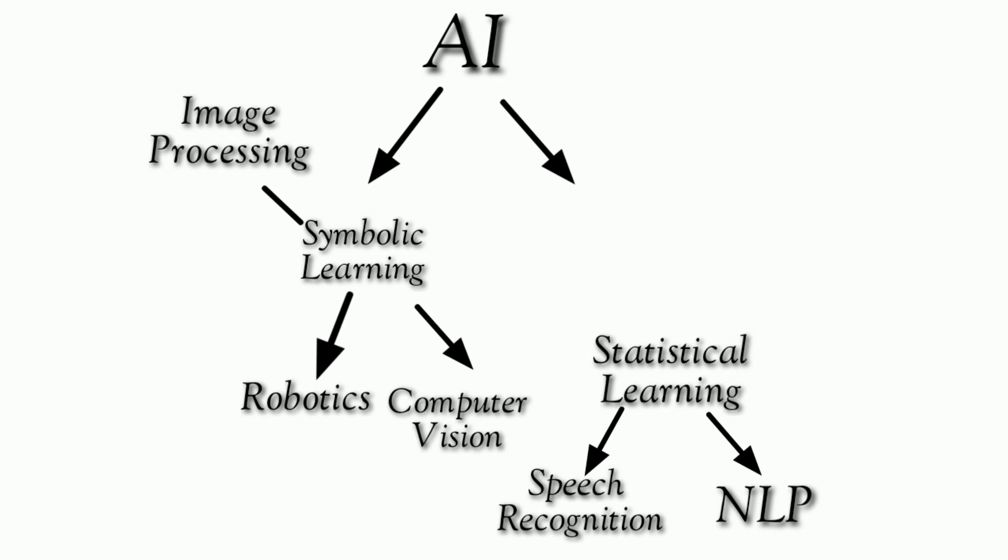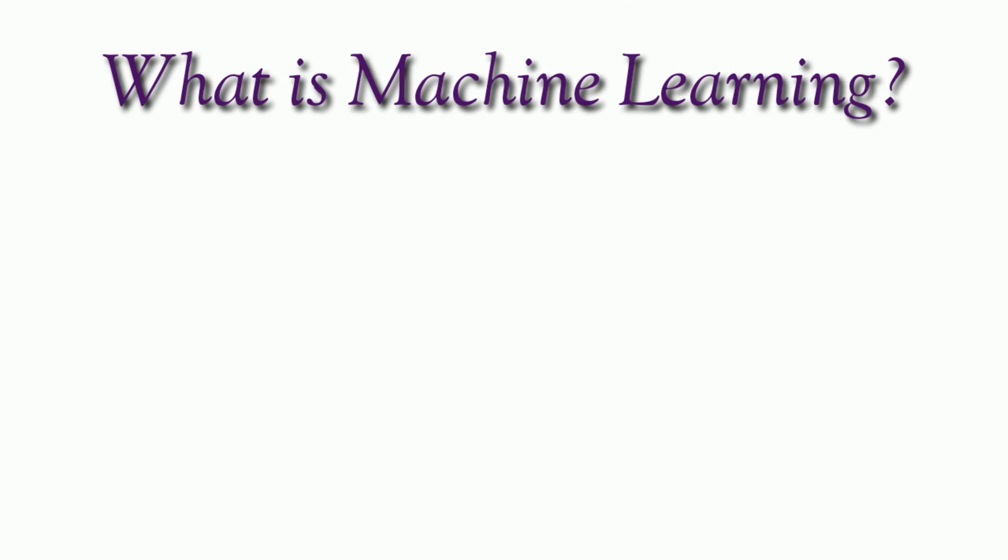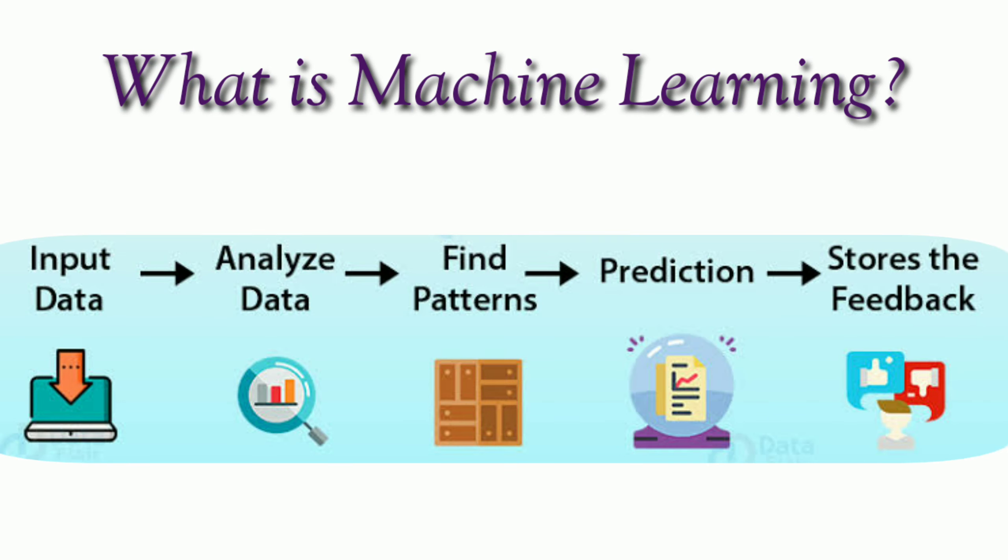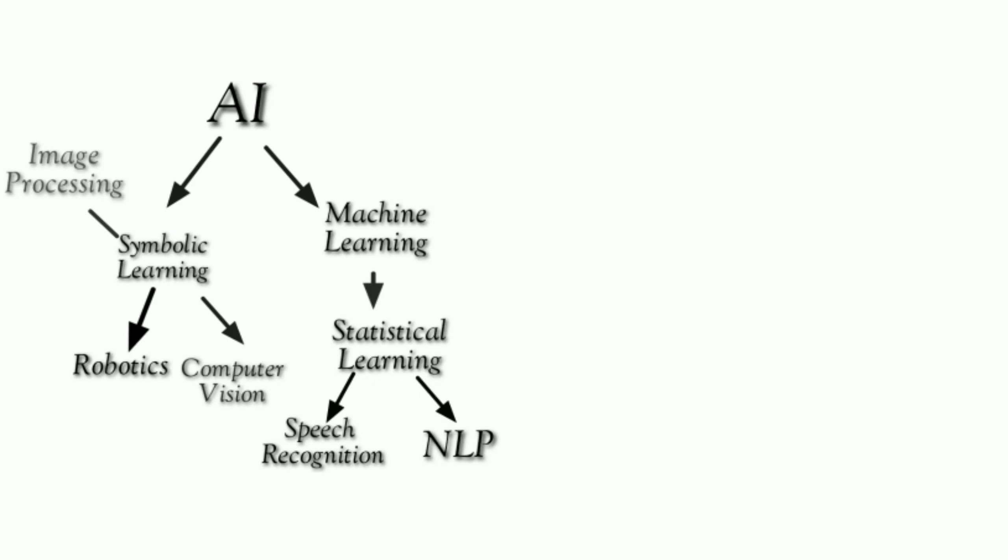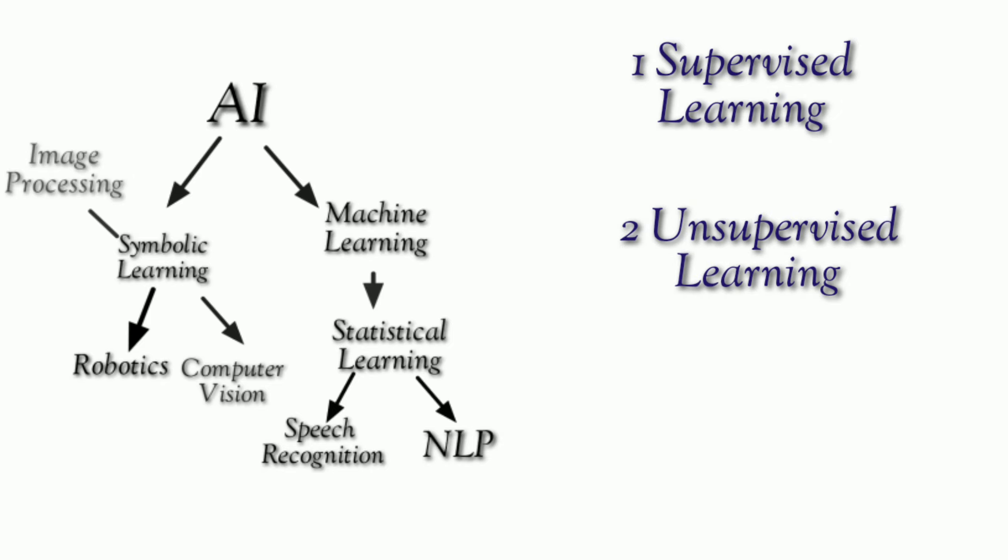This speech recognition and NLP come under Statistical Learning, and Statistical Learning comes under Machine Learning. So, what is Machine Learning? It learns from the data in order to build models that give accurate predictions to find patterns with particularly unseen data. Machine Learning is again divided into three types: supervised learning, unsupervised learning, and reinforcement learning.